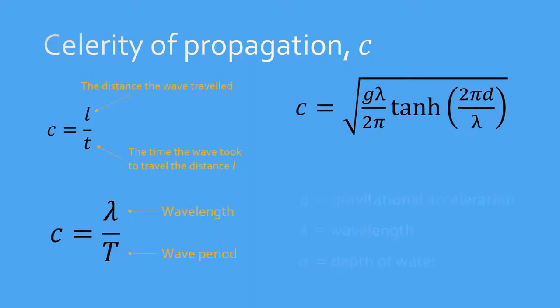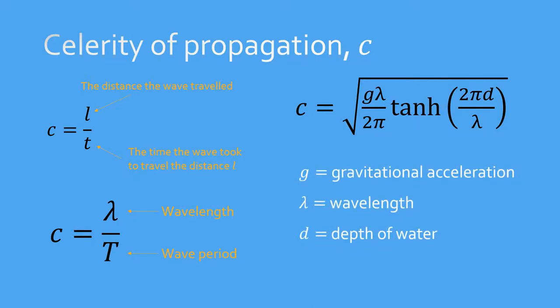This is the general equation for the celerity of a linear wave, propagating over any depth, developed from potential flow theory. This equation can be simplified depending on the ratio of depth to wavelength.